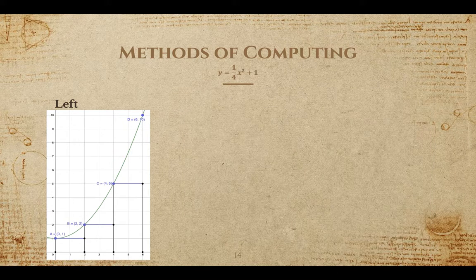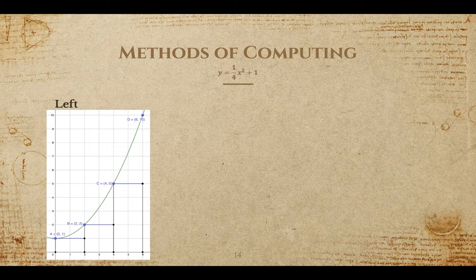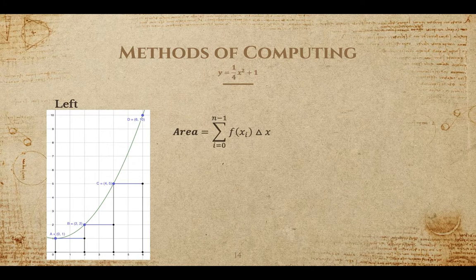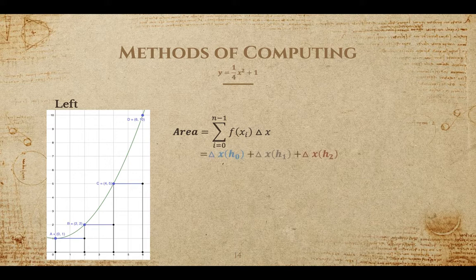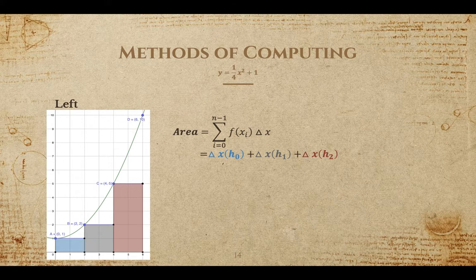Now if we're actually computing these values. For left endpoints, this is the official summation formula where we start at i equals zero and go to n minus one for the function. In our case, we will be going from zero to two. The summation is written out in the following, where delta x is the width of the rectangles and h sub i is the height for that rectangle.